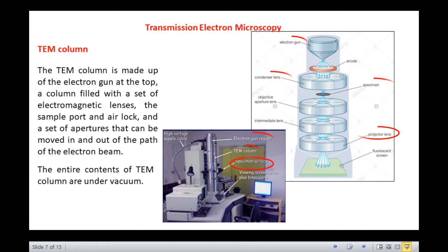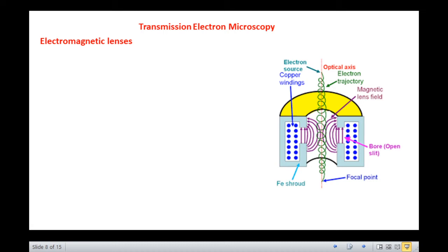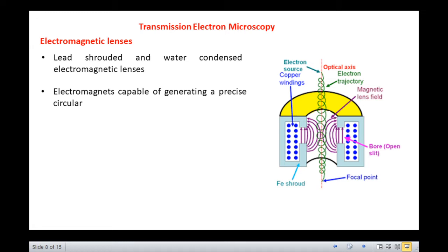Let us now discuss about the electromagnetic lenses, a major component of the transmission electron microscope. A series of lead shrouded and water condensed lenses are present in the TEM column as we saw in the previous slide. These lenses are electromagnets capable of generating a precise circular magnetic field.